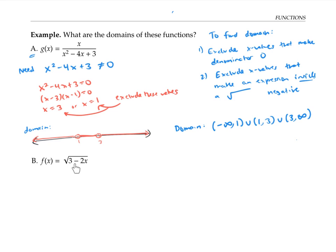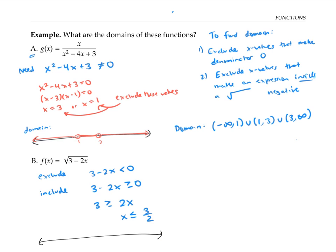In the second example, there's no denominator, but there is a square root sign. So we need to exclude x values that make three minus two x less than zero — equivalently, we include all x for which three minus two x is greater than or equal to zero. Solving that inequality gives x less than or equal to three-halves. Note that three-halves is included because three minus two x is allowed to equal zero — taking the square root of zero is fine.